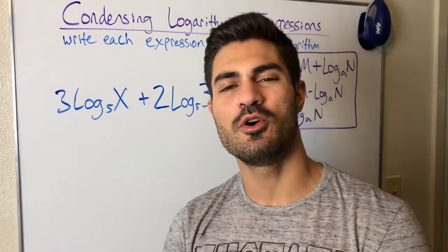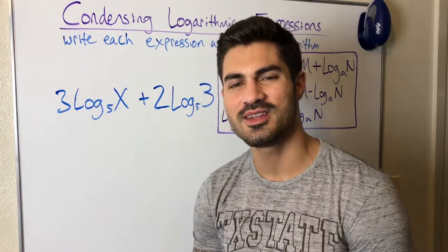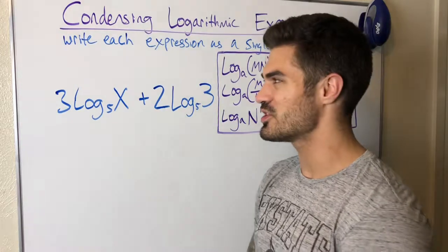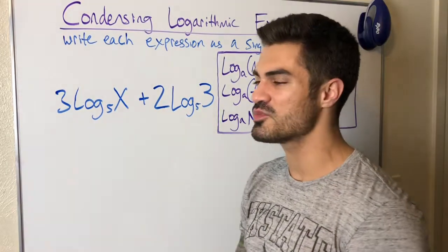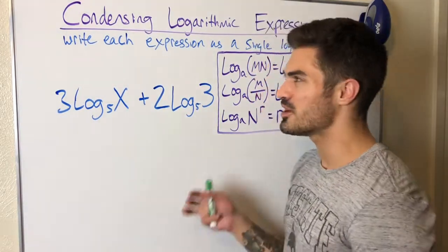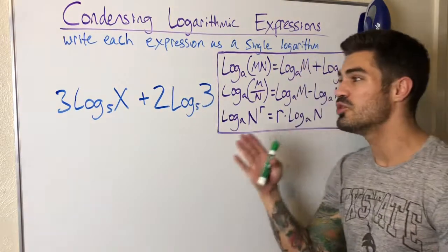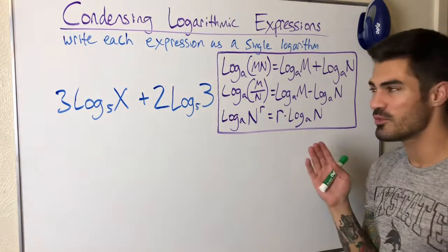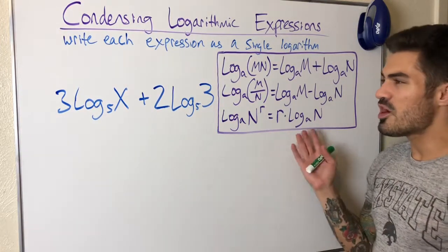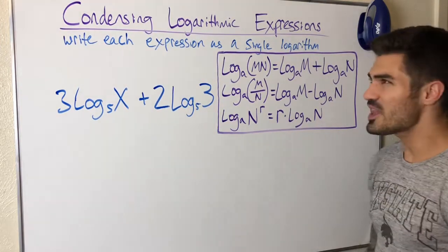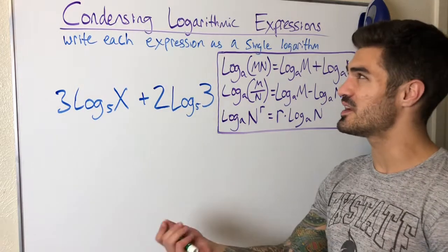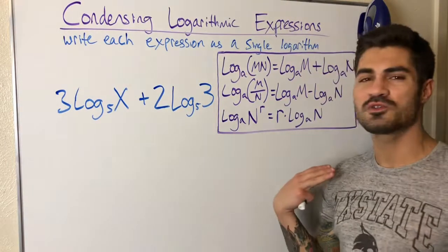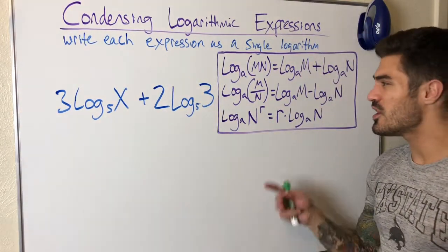Hello everybody, welcome to another video. Hope you're ready to flex those brain muscles today. In this video we are going to condense logarithmic expressions — basically we're taking big long expressions with a bunch of terms and combining them into a single logarithm. We're using our logarithm properties, and before in another video we did expanding logarithmic expressions, where we took a single term and expanded it as far as we could. Now we're doing the opposite.